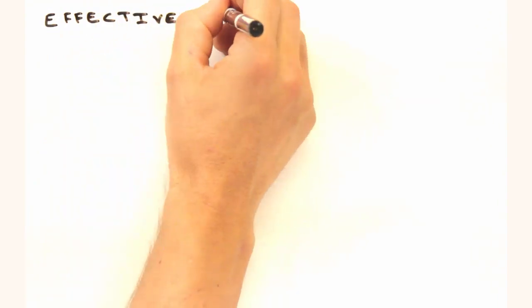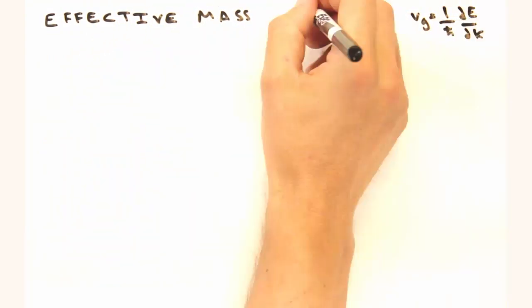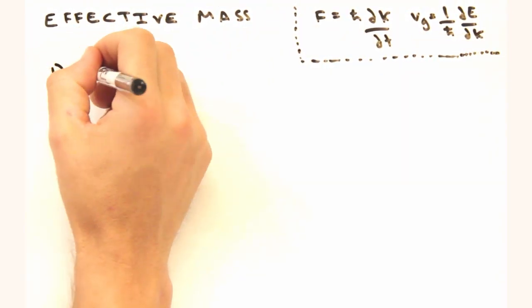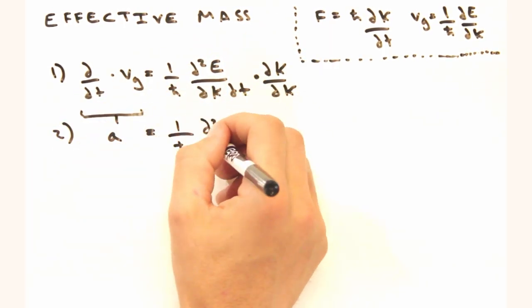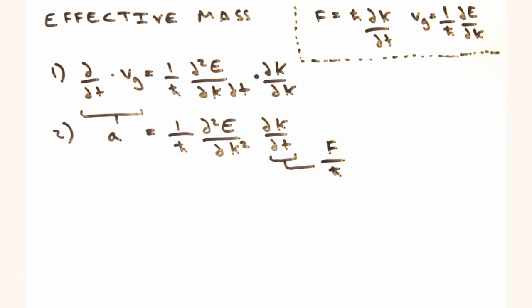Whoa, sounds like there should be a mass involved somewhere too. Yeah, so we can define this term as our effective mass. It's not a real mass, but it's a descriptor of how the electron group velocity changes in an electric field.